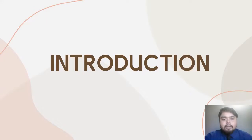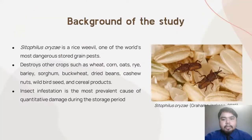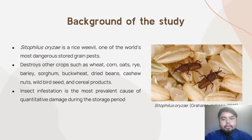I would like to start with an introduction of my studies. Sitophilus oryzae is a rice weevil in the family Curculionidae and the Order Coleoptera, and one of the world's most dangerous stored grain pests. The host range of this species is not particularly rice only, but it also destroys other crops such as wheat, corn, oats, rye, barley, sorghum, buckwheat, and other cereal products.